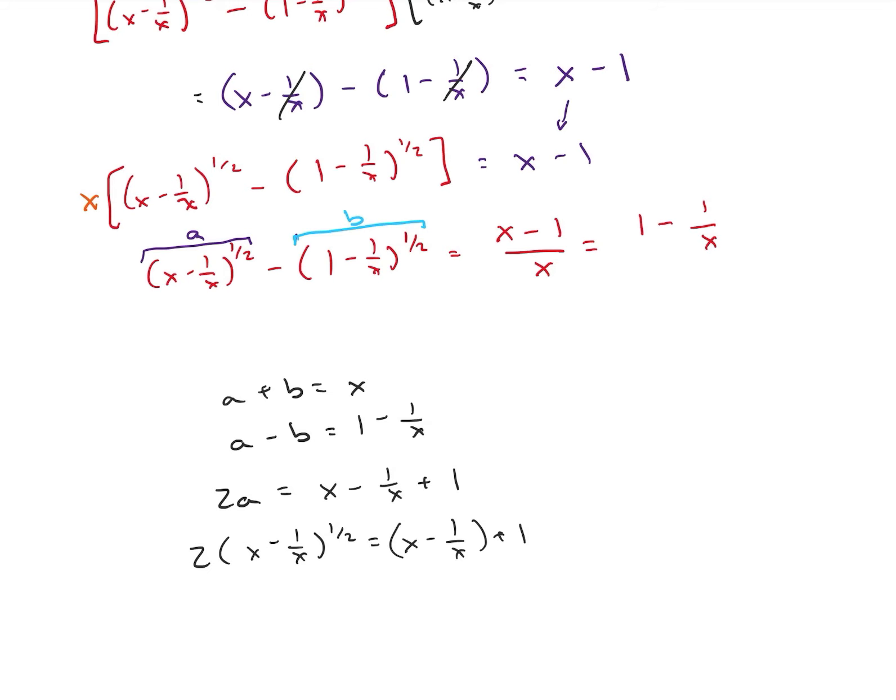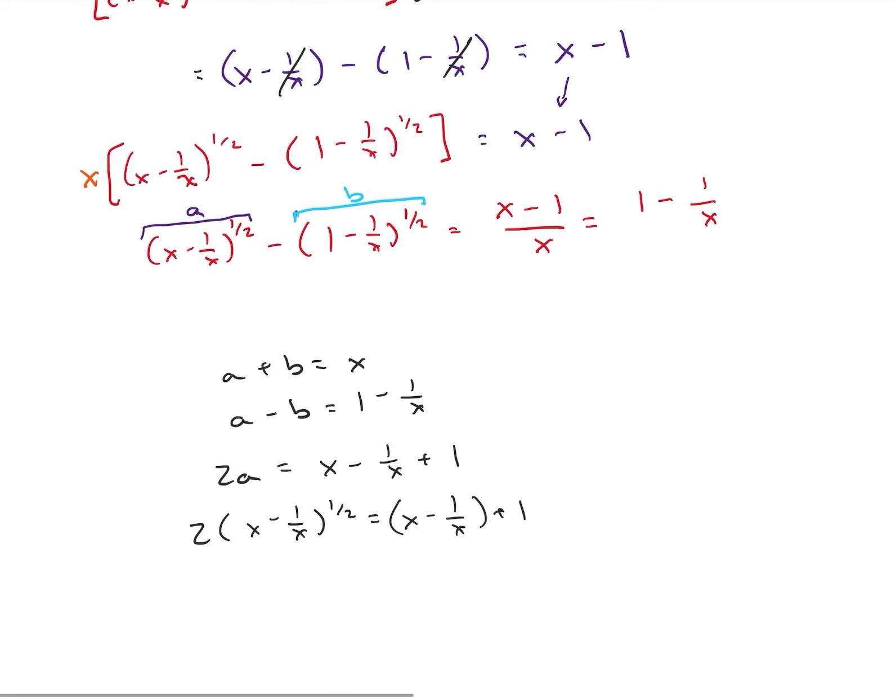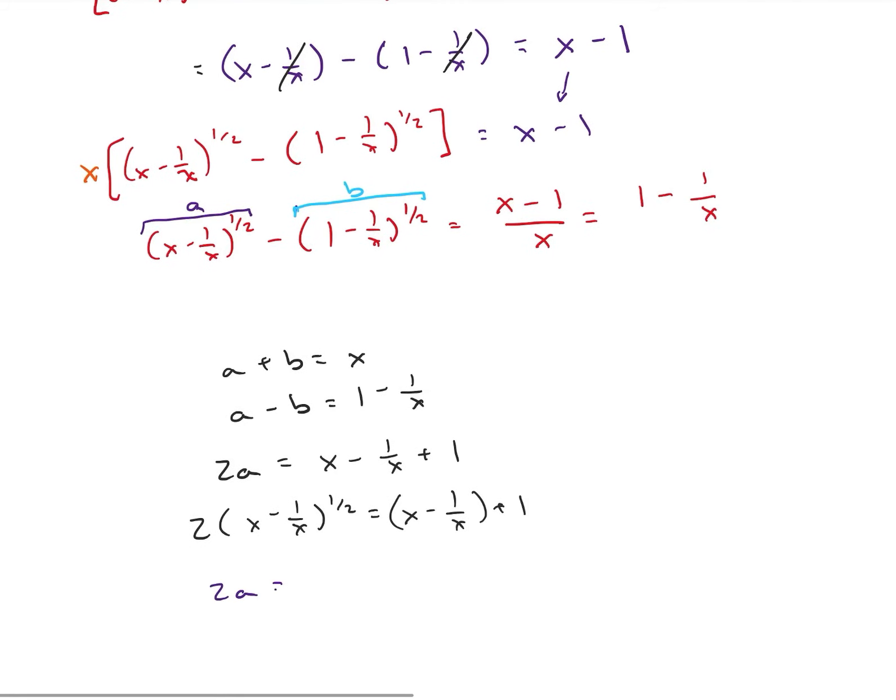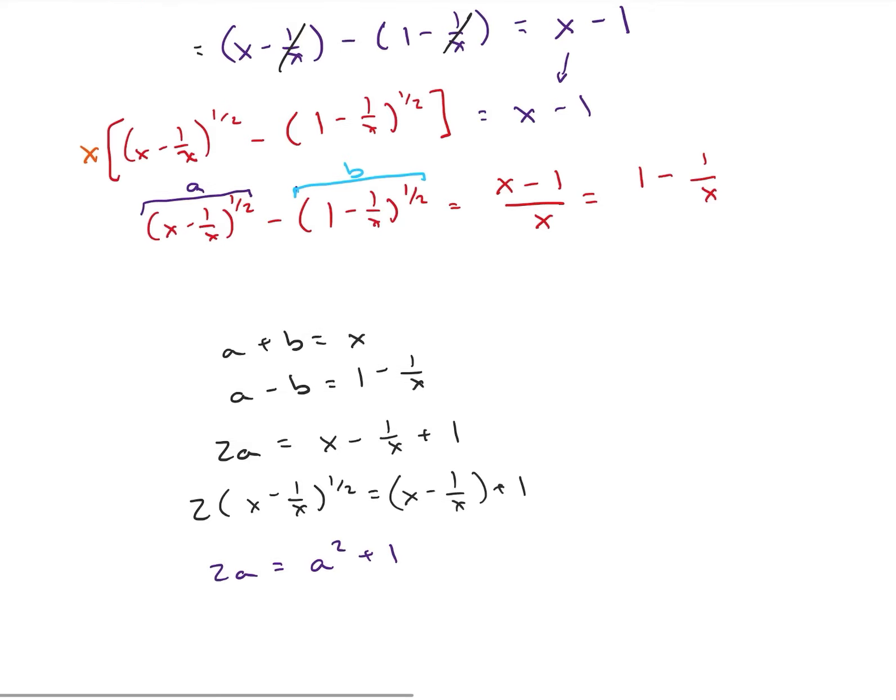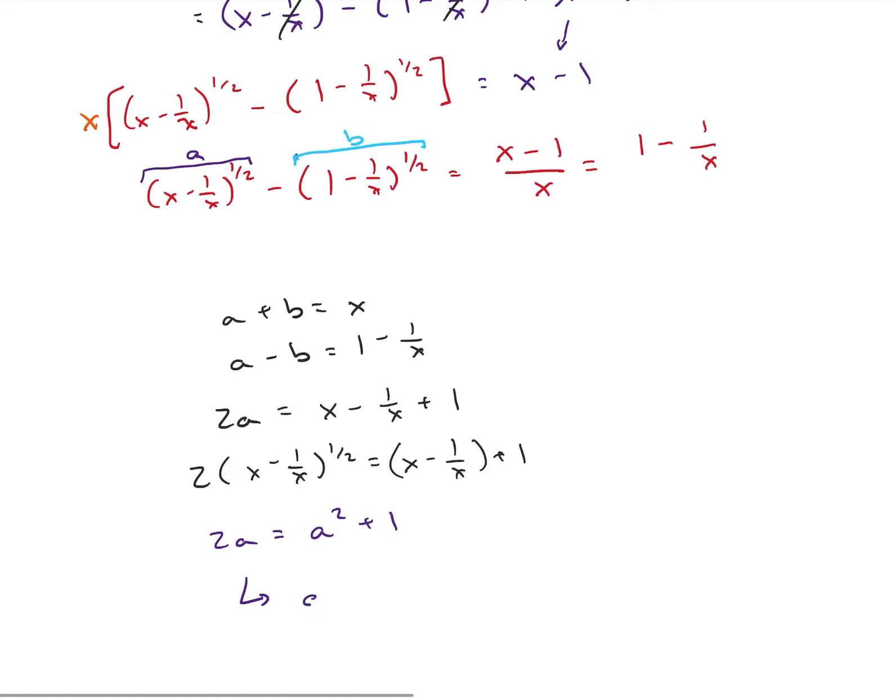So, I see that I have that a squared on the right side. So, we have 2a is equal to a squared plus 1. So, let's go ahead and solve this equation. We have a squared minus 2a plus 1 is equal to 0. And that's equal to a minus 1 squared. So, we can see that a is equal to 1.